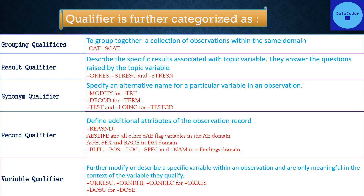Record qualifiers define additional attributes of the observation record. Examples include reason not done (e.g., LBREASND), AESER and AESAE flags in AE domain, AGE, SEX, and RACE in DM domain, baseline flag LBLFL, position VSPOS, location, and specimen name in findings domains.